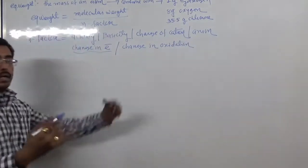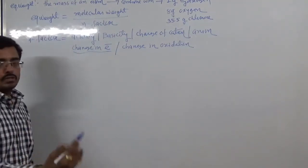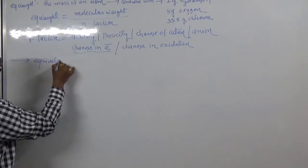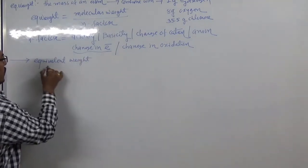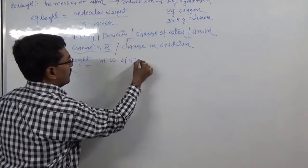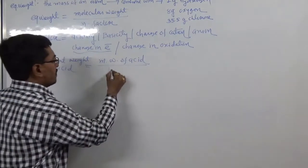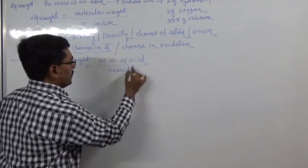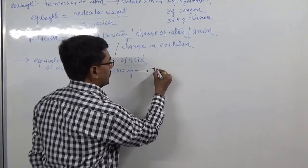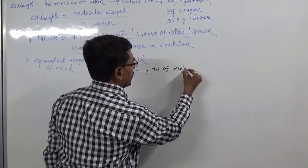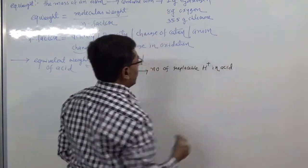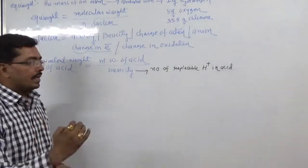Now we will study how to find equivalent weight of an acid. Equivalent weight of acid equals molecular weight of acid divided by basicity. Basicity is the number of replaceable H⁺ ions in the acid.